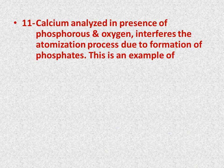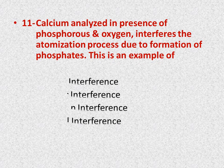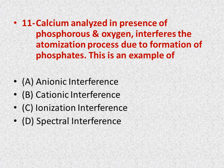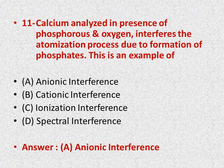Question number eleven: calcium analyzed in the presence of phosphorus and oxygen interferes with the atomization process due to formation of phosphates. This is an example of — options: A is anionic interference, B is cationic interference, C is ionization interference, D is spectral interference. The right answer is A — anionic interference.